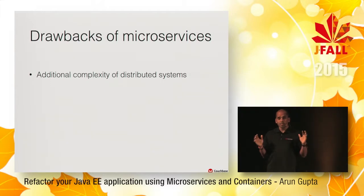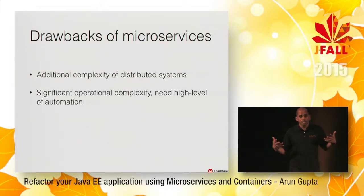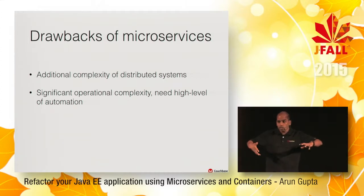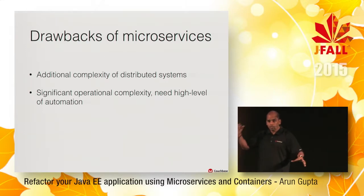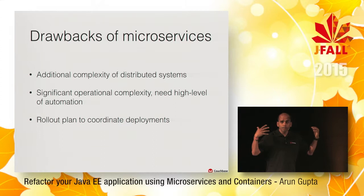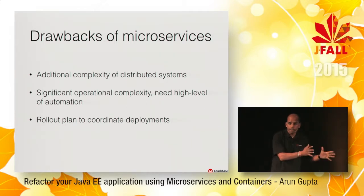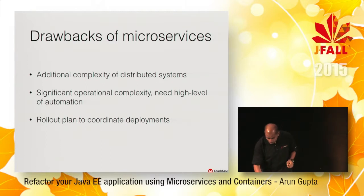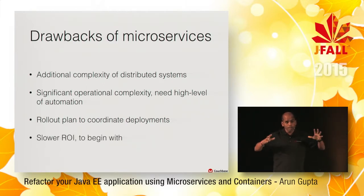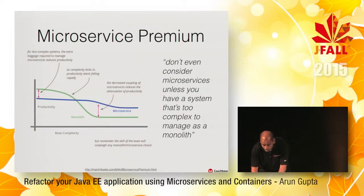Microservices is by no means a silver bullet. It's not going to solve your architecture problems. It does come with additional complexity of distributed systems and significant operational complexity. Whether you write one microservice or twenty, there is an initial investment required when refactoring from monolith to microservices — you need to really understand that before jumping in. You need a rollout plan to coordinate deployments and manage REST URI backwards compatibility. That's where your structured schema kind of fails and you start bringing in flexible schema — that's where Couchbase excels.